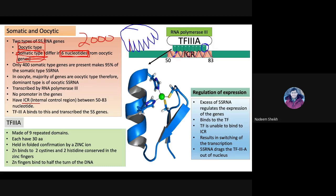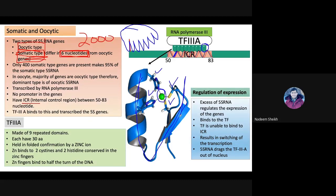Zinc fingers are responsible for interacting with DNA. They are called zinc fingers because each finger-like projection is held together by one zinc atom. The polypeptide has two histidine amino acids on one side and two cysteine amino acids on the other side, and the zinc atom binds to these histidines and cysteines, maintaining the finger-like shape. One side forms a helical coil and the other side forms a beta-sheet.